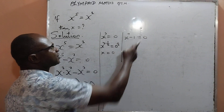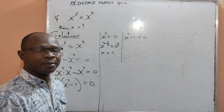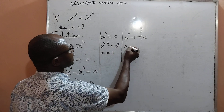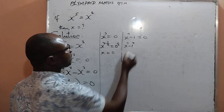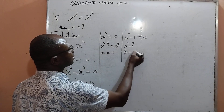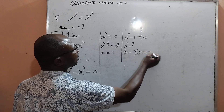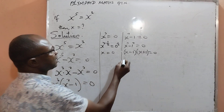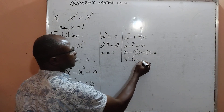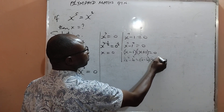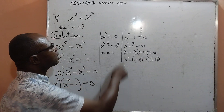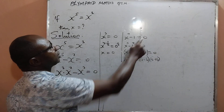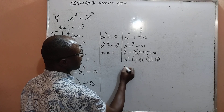From the other factor, x raised to power 2 minus 1 can be written using the difference of two squares, because 1 is the same as 1 raised to power 2. Therefore I can write it as x raised to power 2 minus 1 raised to power 2, which factors as x minus 1 into x plus 1, equal to 0. The difference of two squares rule states: a squared minus b squared equals a minus b times a plus b.